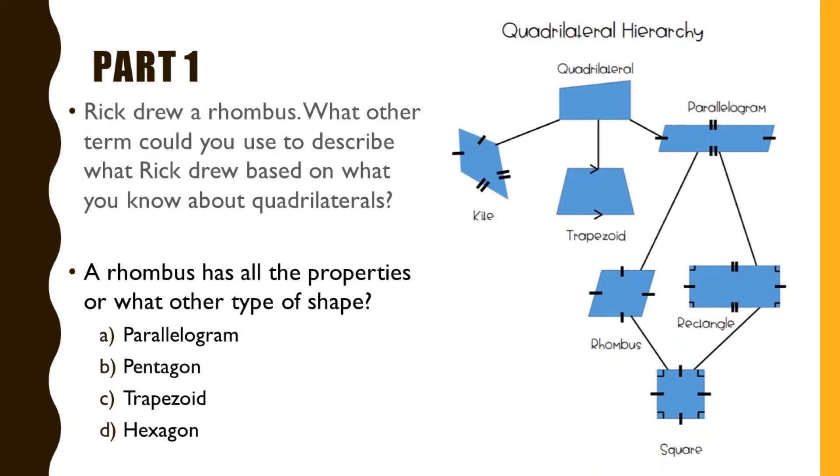Let's review part 1. This quadrilateral hierarchy will help us answer the question. The quadrilateral is any four-sided polygon or four-sided shape. Then we can break that down into smaller categories like a kite, trapezoid, and parallelogram.